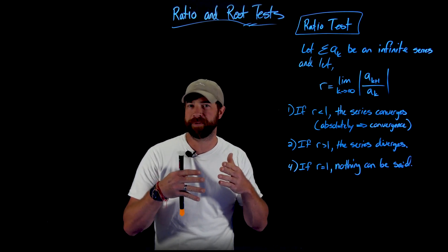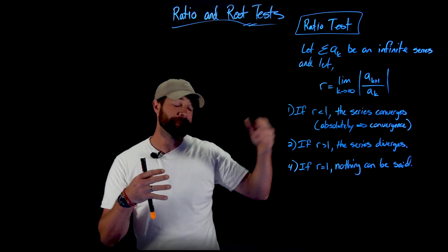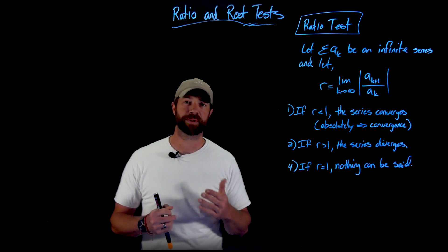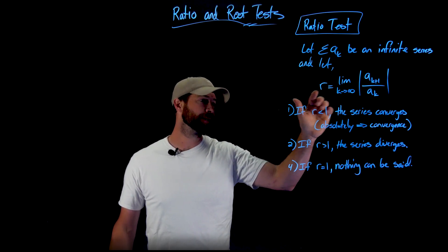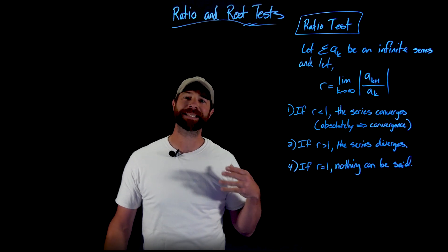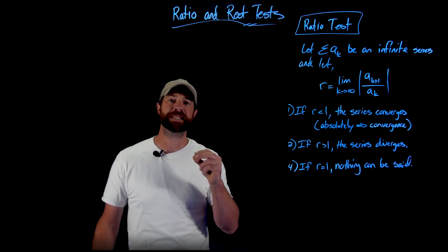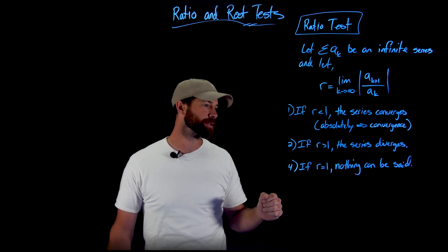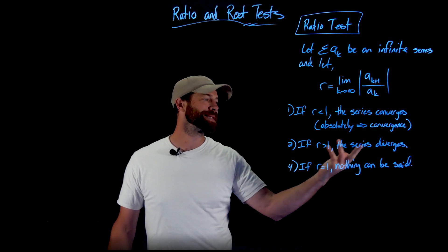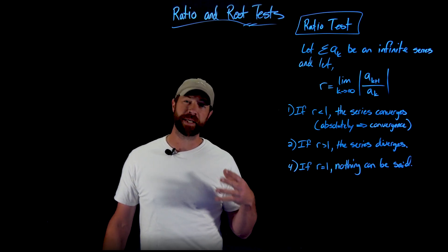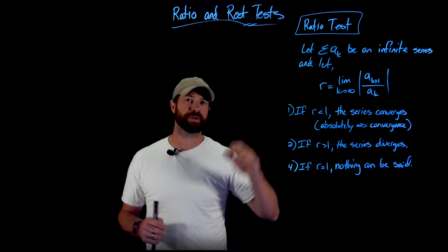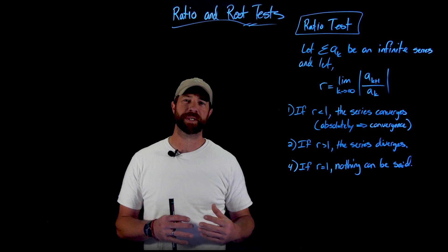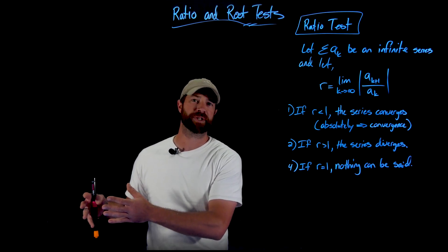So if we have term 100 and 101, let's say they have a ratio of about 2.5. And if this limit exists, it'd be the same for the 2000 and 2001 terms. What the ratio test says is that if you're able to find this limit, this r value, if it's less than one, then this series will converge — it actually states that it converges absolutely, and we know absolute convergence implies convergence. If r is greater than one, the series diverges. And if r equals one, we can't say anything using this ratio test.